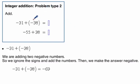So again, here's another quick example. What are our rules? Well, let's look at the first problem. We got negative 31 plus negative 38. The signs are the same, they're both negative. So we ignore the signs and add the numbers.